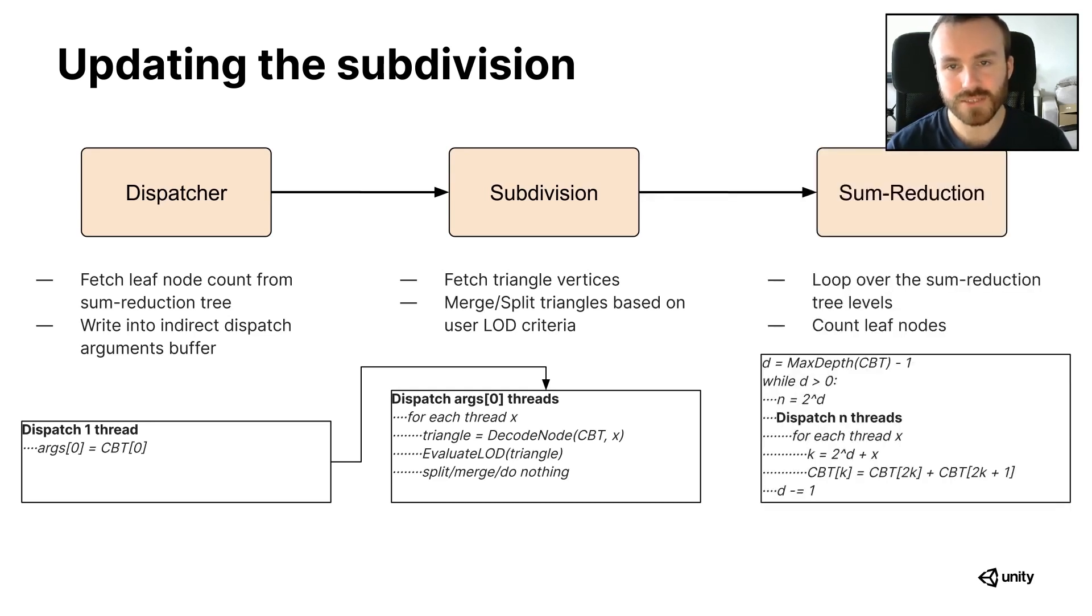The last step, since during the subdivision dispatch we might have created new leaf nodes or deleted some, is to update the sum reduction tree. We use another compute kernel repeatedly for this, iterating over each level in the sum reduction tree while summing the leaf node count. And finally, we go to the next frame and start again with the dispatcher kernel, which will read the new leaf node count value to prepare for the next subdivision step. And that's it for updating the longest edge bisection.